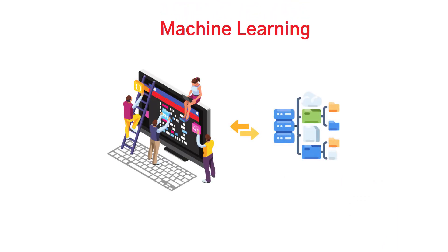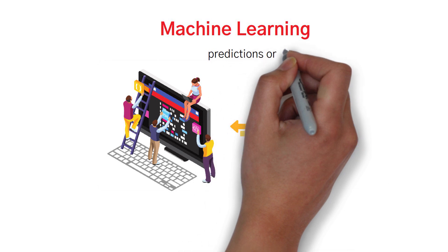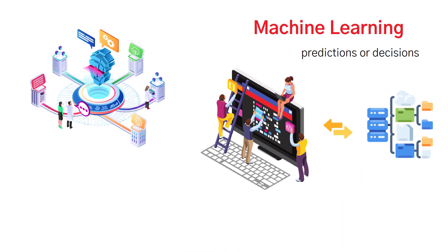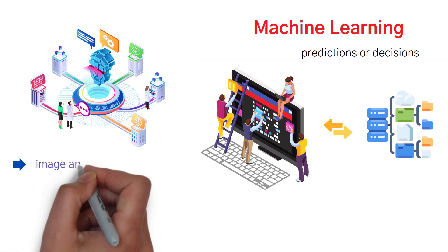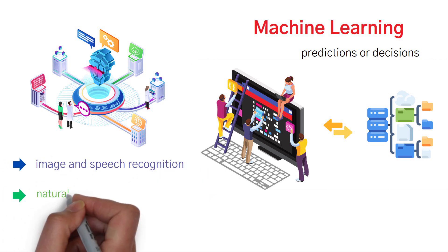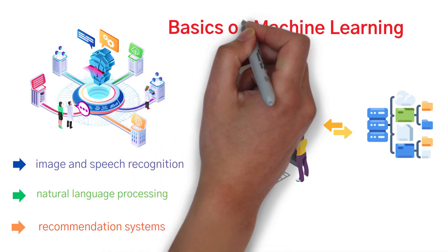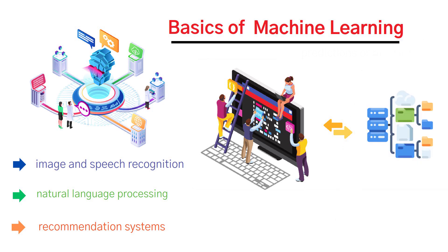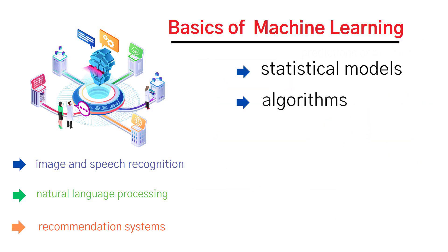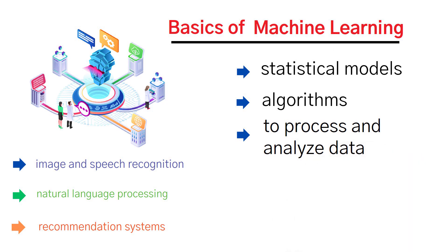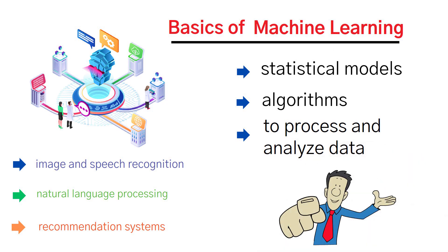Machine learning is all about teaching computers to learn from data and use that knowledge to make predictions or decisions. It's a powerful tool used in a wide range of fields, from image and speech recognition to natural language processing and recommendation systems. In this video, we'll be diving into the basics of machine learning, including statistical models and algorithms, and how they're used to process and analyze data. So let's get started.